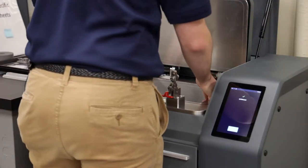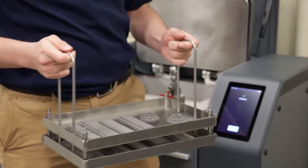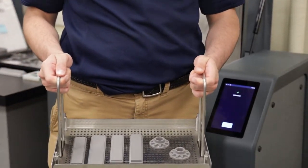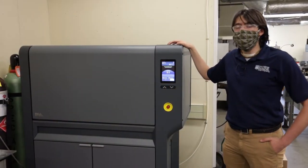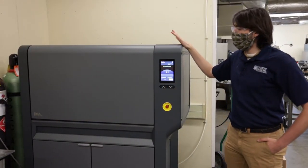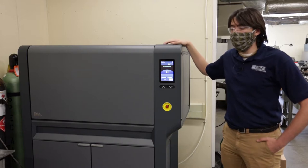After the part comes out of the D-Binder, the part is in the brown state and ready to go into the furnace. So the third machine in the Studio System is the furnace.